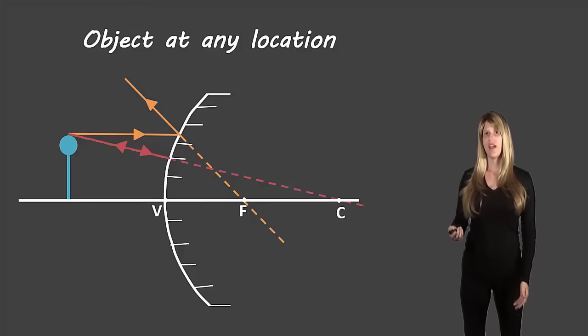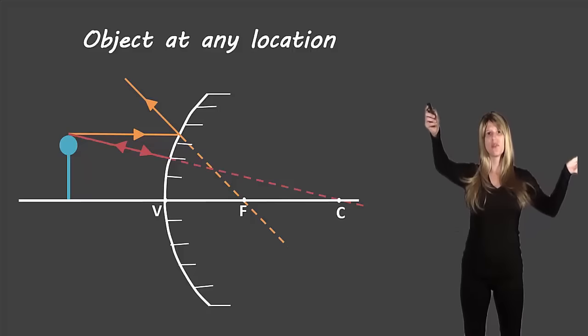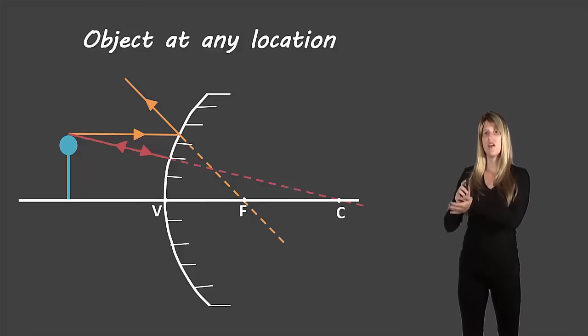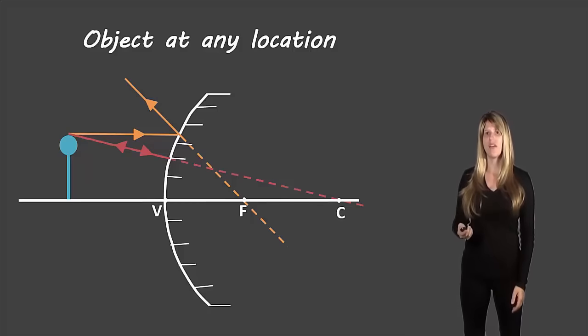Now if we look at our diagram we can see where the rays cross. The reflected rays actually separate from each other but when we back it up on the other side of the mirror we can see that they cross somewhere between V and F.